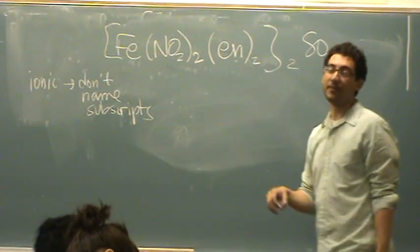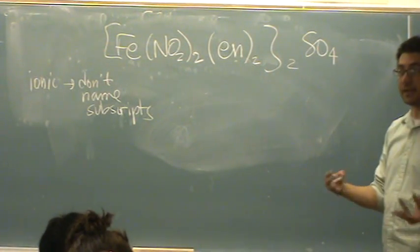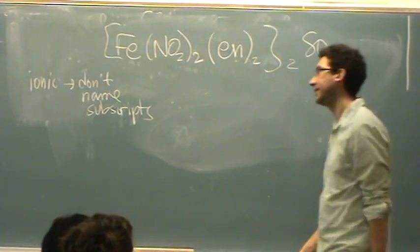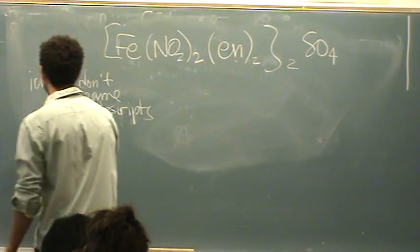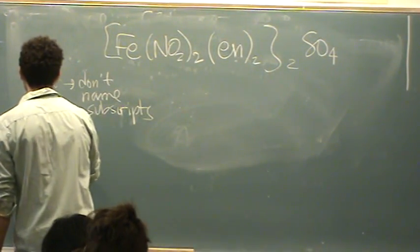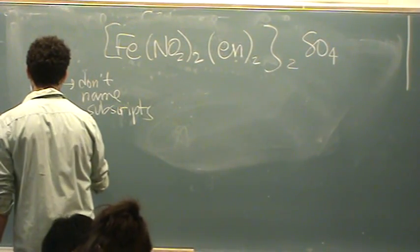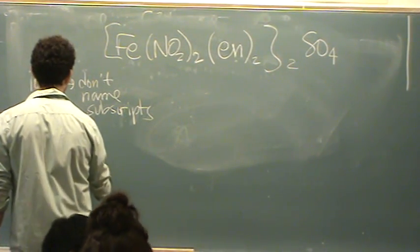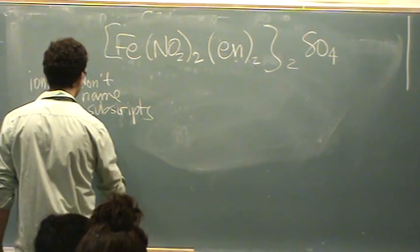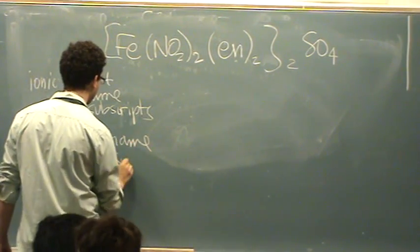So think of magnesium chloride, MgCl2, you don't say magnesium di-chloride. However, you learned that if it's molecular, which is covalent, then you name subscripts.